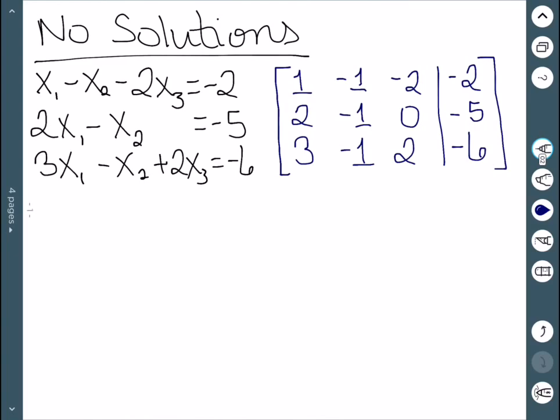To get rid of this 2, we would need to do negative 2 row 1 plus row 2. And to get rid of the 3, we would need to do negative 3 row 1 plus row 3.